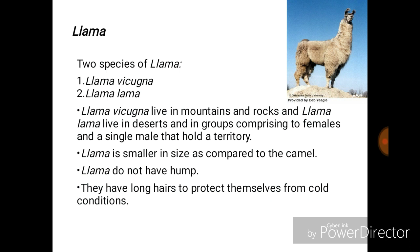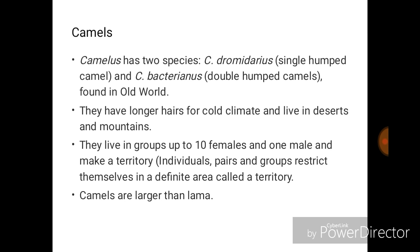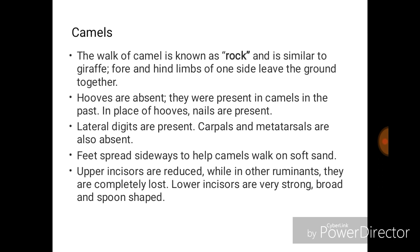Vicugna lives in mountains and rocks while the Llama lives in deserts and forms groups comprising two females and a single male that hold a territory. The Llama is smaller in size, does not have a hump, and has long hair to protect itself from cold conditions. Camelus has two species: dromedarius, which is single-humped, and bactrianus, which is double-humped. They have long hair for cold climates, live in deserts and mountains, and camels are larger than the Llama. The gait of the camel is known as pacing and is similar to the giraffe — fore and hind feet of one side leave the ground together. Hooves are absent; nails are present instead. Lateral digits are present, feet spread sideways to help the camel walk on soft sand, and upper incisors are reduced. Lower incisors are very strong, broad, and spoon-shaped.